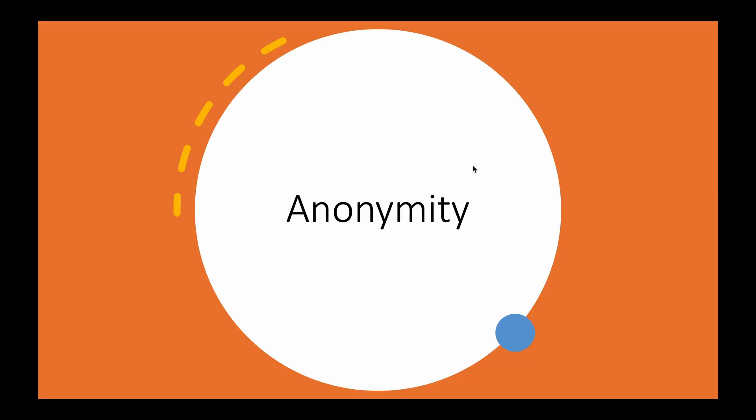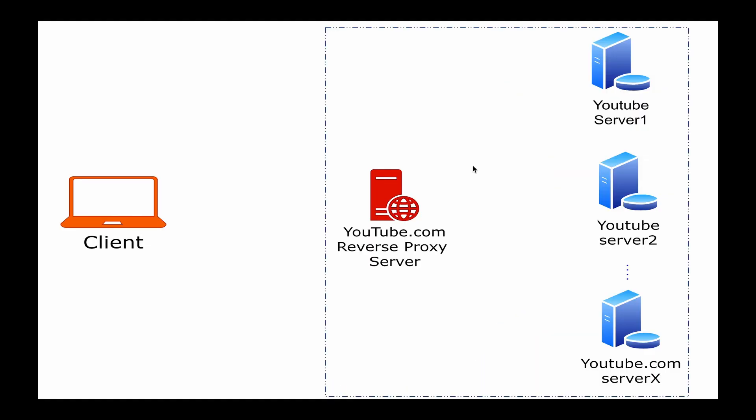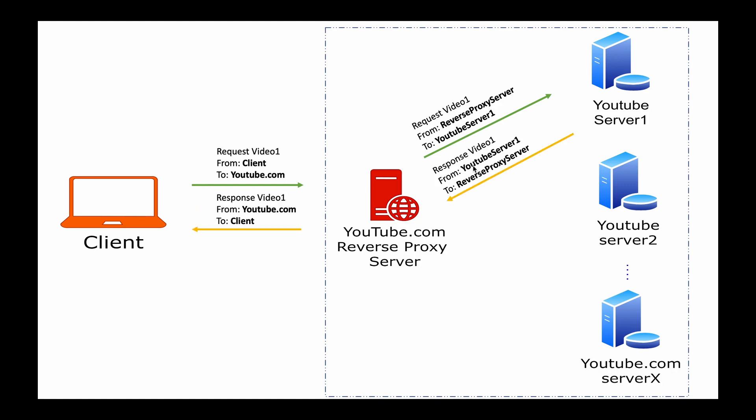Another big advantage is anonymity. In the case of reverse proxy, the client doesn't have knowledge about the final destination YouTube server — in this case, YouTube server one. This anonymity protects the destination server from potential attacks like DDoS attacks.